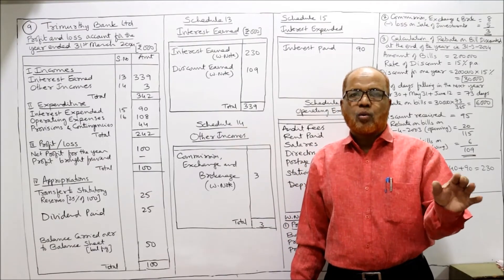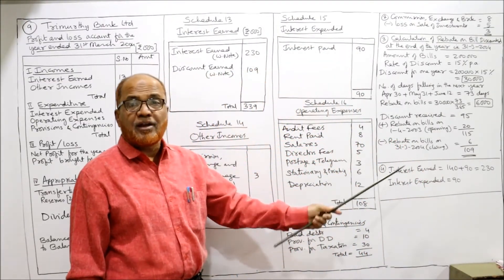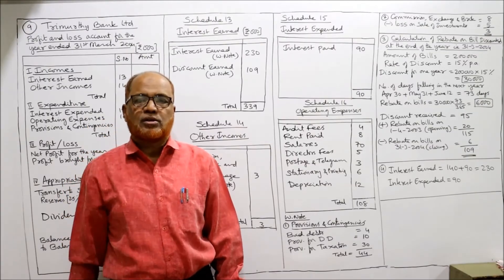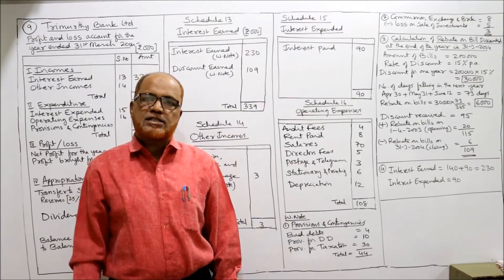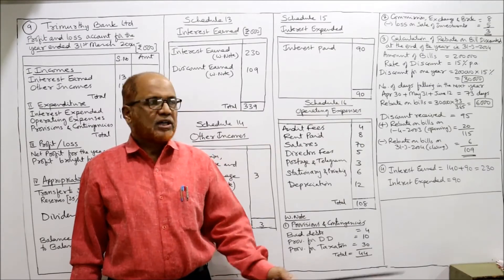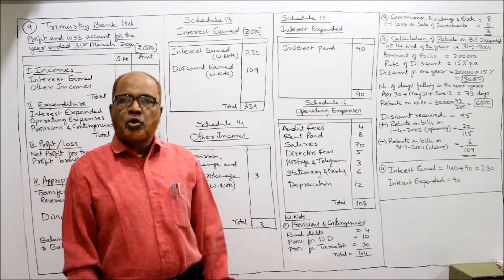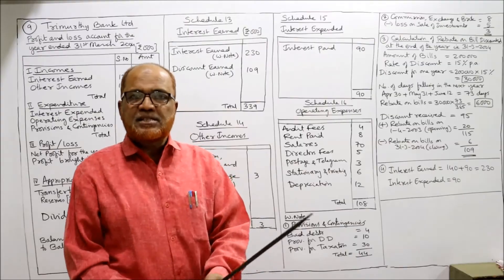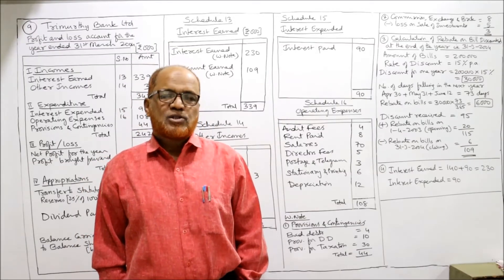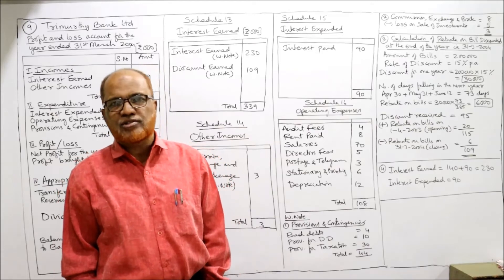The most important point in this problem is regarding the interest. In the first line, interest is 1,40,000 after deducting interest paid 90,000. We should not deduct — we need both interest paid and received separately. So we add back the deducted amount: 140 plus 90 = 230 should be taken as interest earned, and 90 as interest expended. That is the new point. I hope you understood my explanation. If you have, please share it, like it, give a comment, subscribe to my channel, and circulate it among your groups. See you in the next video.